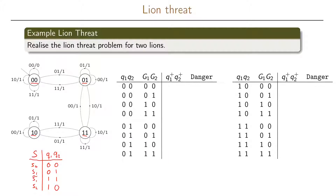Here is the truth table where we have enumerated the states and the inputs, giving all 16 possible combinations of state and inputs. What we want to do now is to define the output function for Q1 plus, the function for Q2 plus, and then the danger function. We can do this directly by looking at our state transition graph, and it is usually easiest to fill this out one row at a time, filling in all the different functions at the same time.